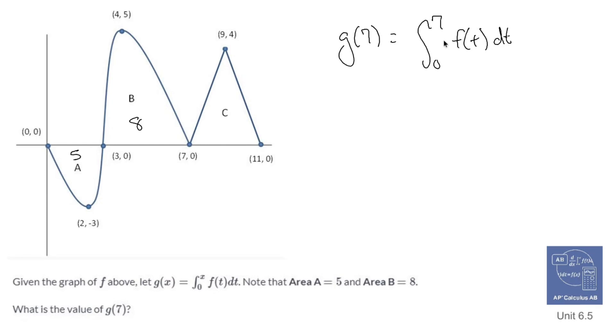Now, what you're being asked to do is find the area under the curve from 0 to 7. Any area above the x-axis is a positive area, and any area under the x-axis is a negative area.